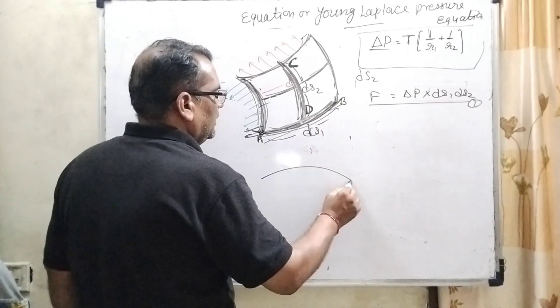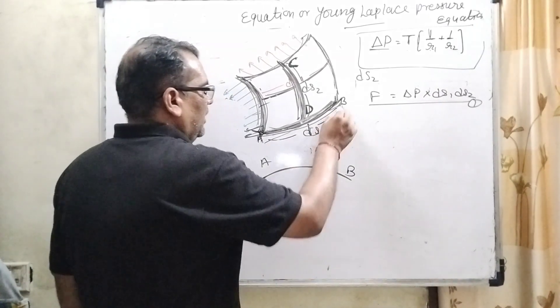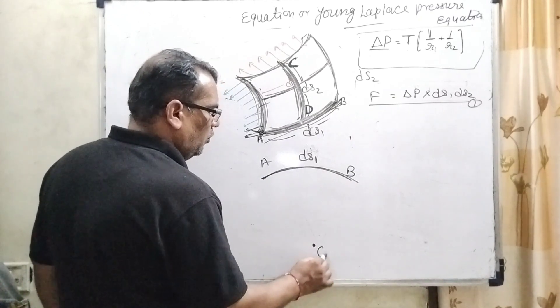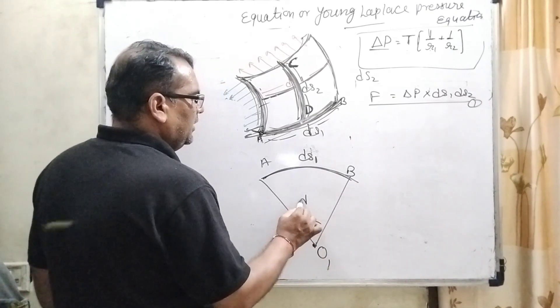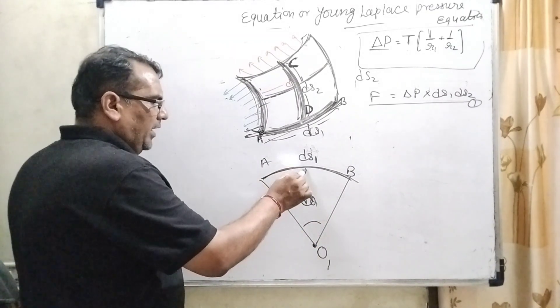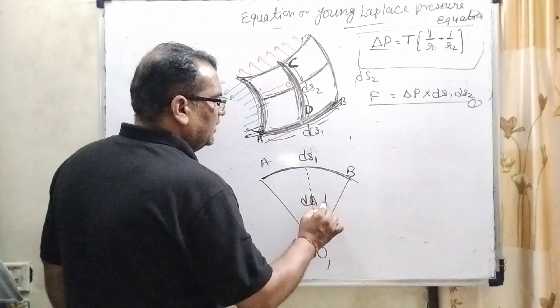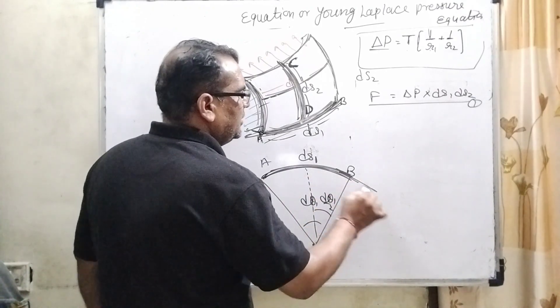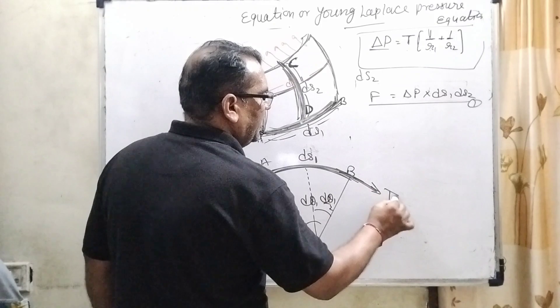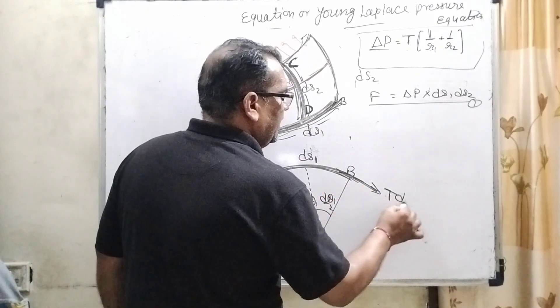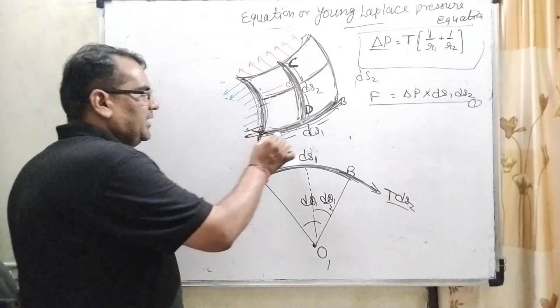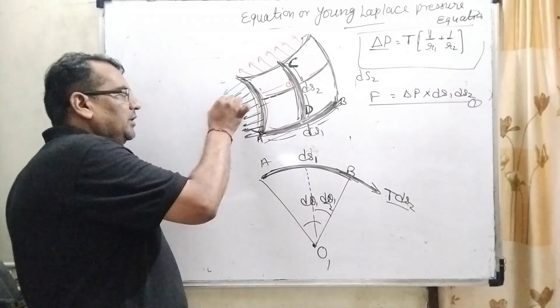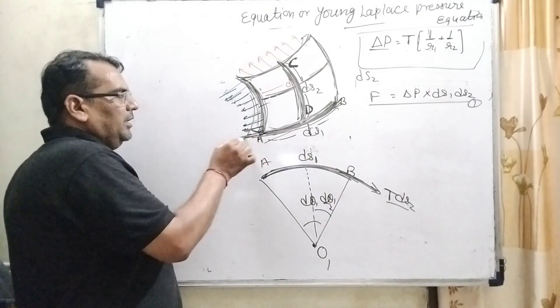Now, we have to take the AB curvature. This is AB curvature, and length of arc is DS1. The center of this curvature is considered O1, and the angle formed is D theta 1. We have to draw an angle bisector, then it becomes D theta 1 by 2. As you see, the tangential force, means surface tension, is acting towards the surface and DS2. For this curvature, the whole pressure is acting towards this side, inside the curvature.